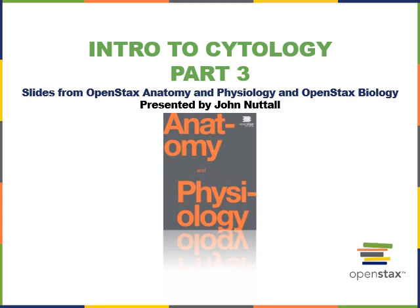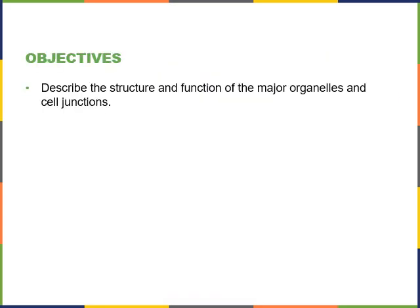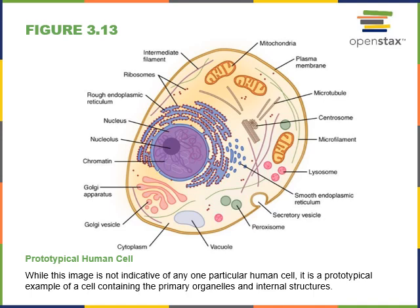This video covers part three of an introduction to cytology for human anatomy. We will cover the following objective: describe the structure and function of the major organelles and cell junctions. Here we can see an illustration of a prototypical human cell, which has most of the organelles found in cells within the human body. We'll go through each of these different organelles, starting off with the nucleus.